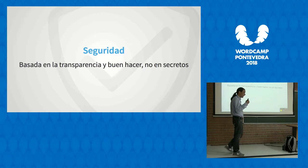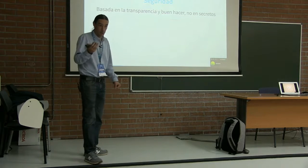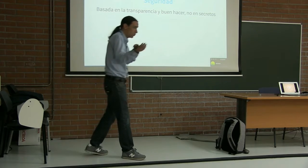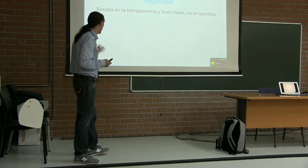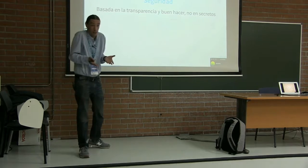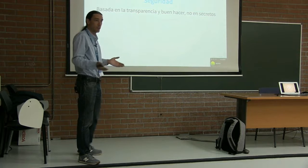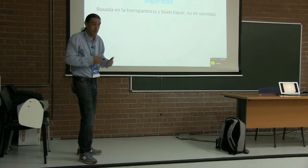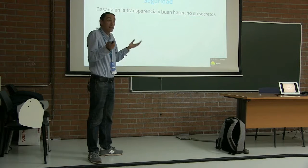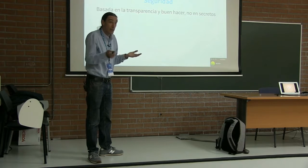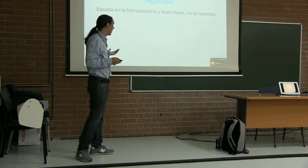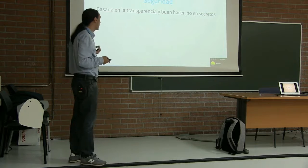La seguridad. Bajo mi punto de vista, el software libre es más seguro porque su seguridad no se basa en secretos — en que como la gente no sabe cómo está hecho, es seguro. En cuanto alguien lo descubra, se acabó la seguridad. Si la seguridad está basada en la transparencia y en hacer las cosas bien — aquí lo puedes comprobar en las tripas — eso me da mucha más seguridad. WordPress está probado en millones de sitios; si alguien detectase un problema, lo sabríamos muy rápidamente y saldría una actualización.